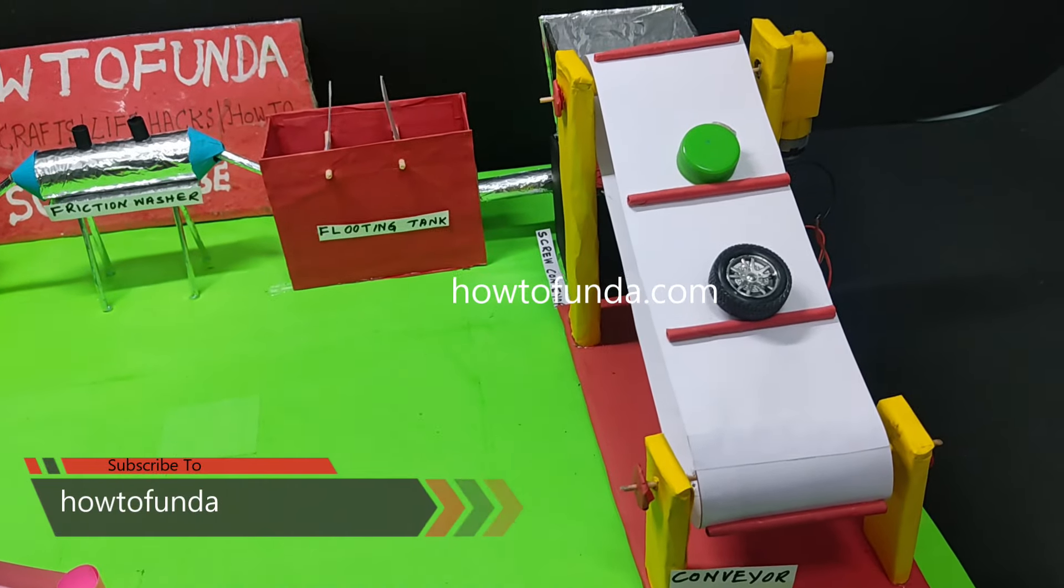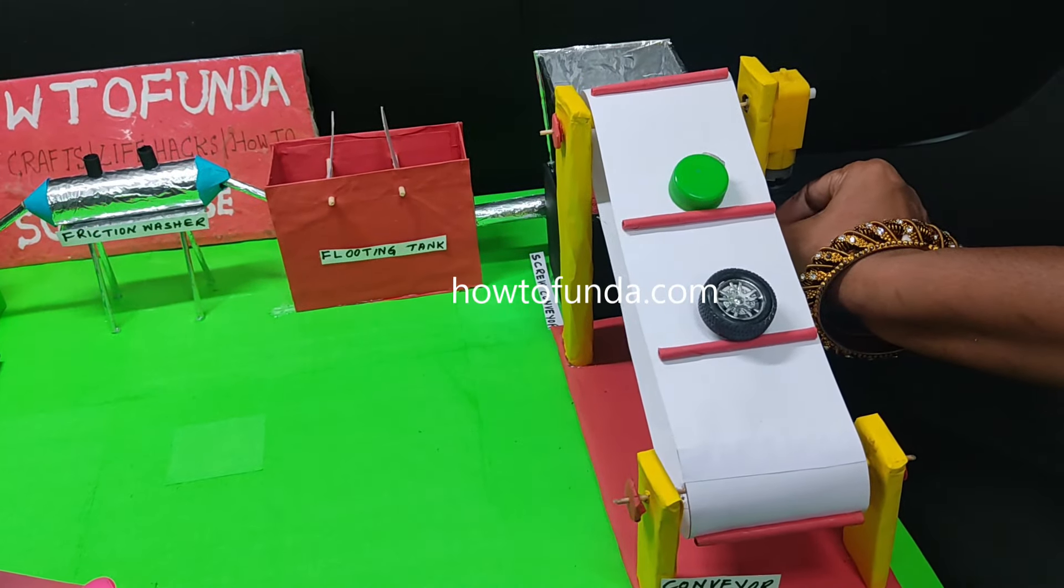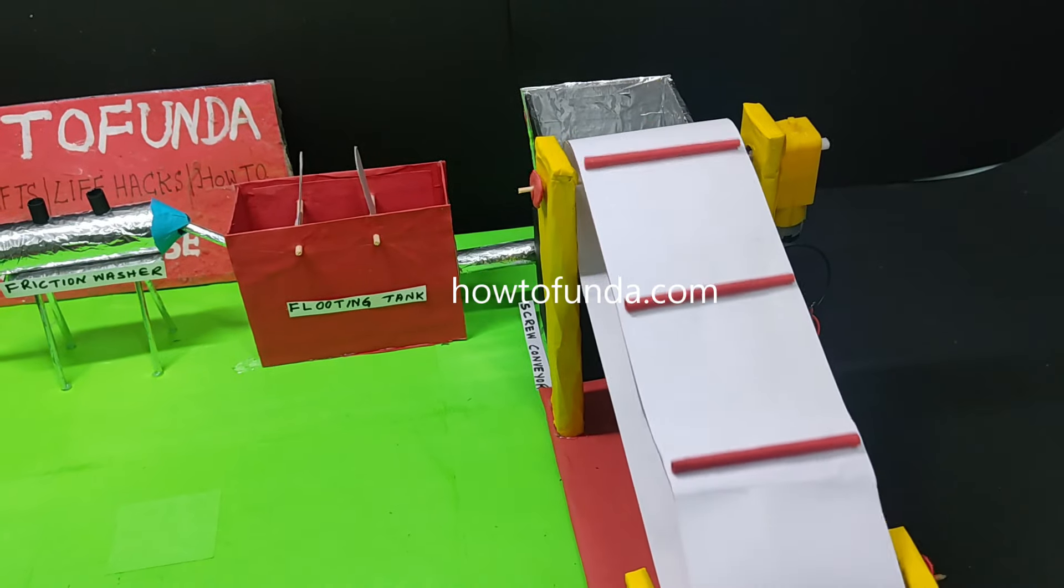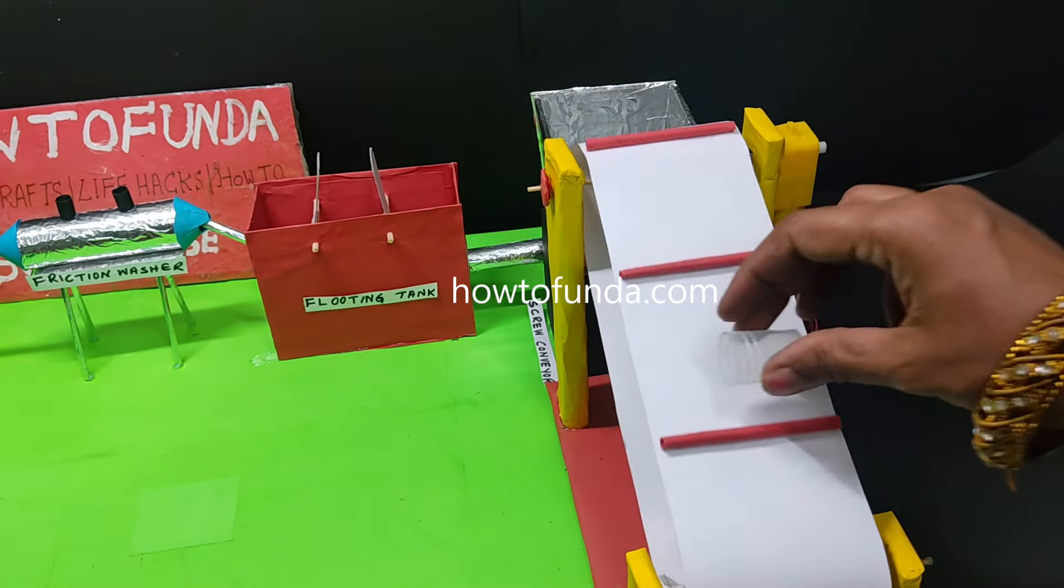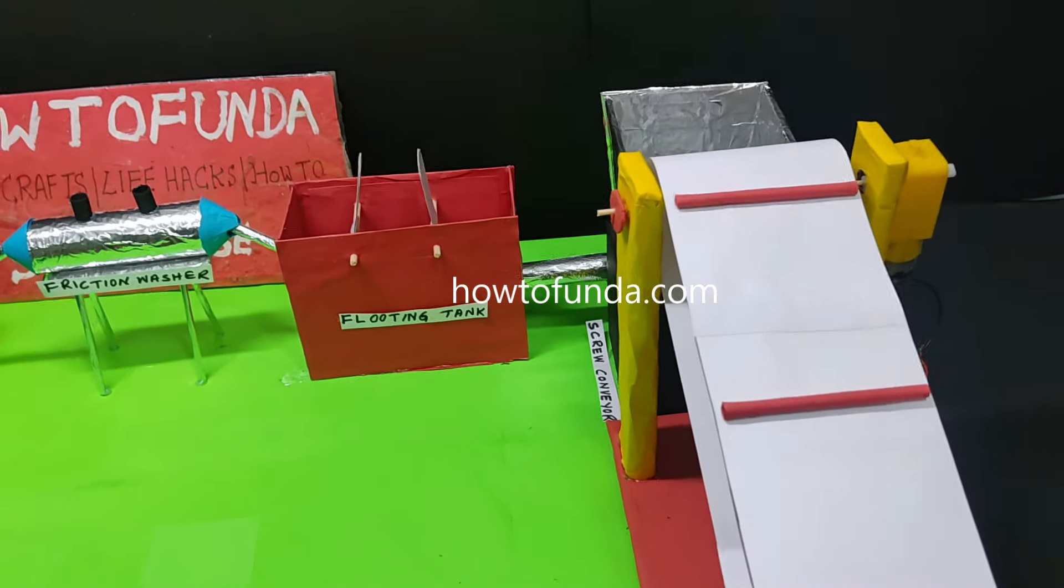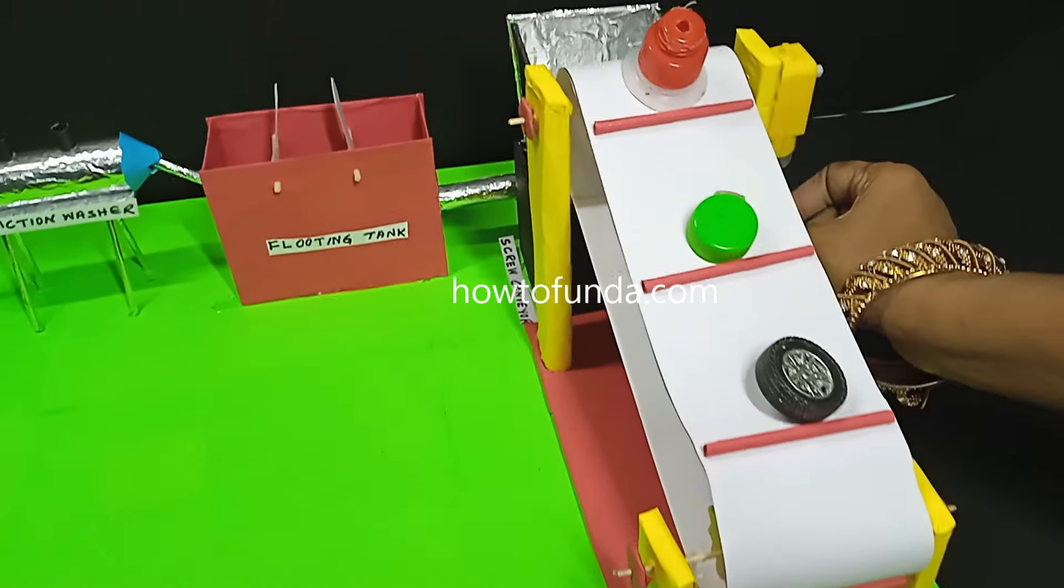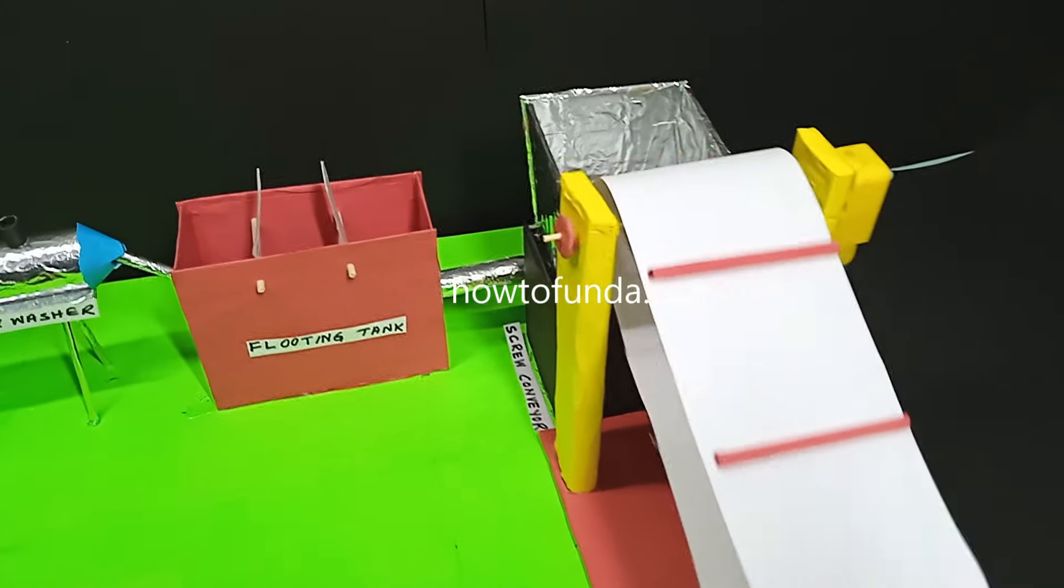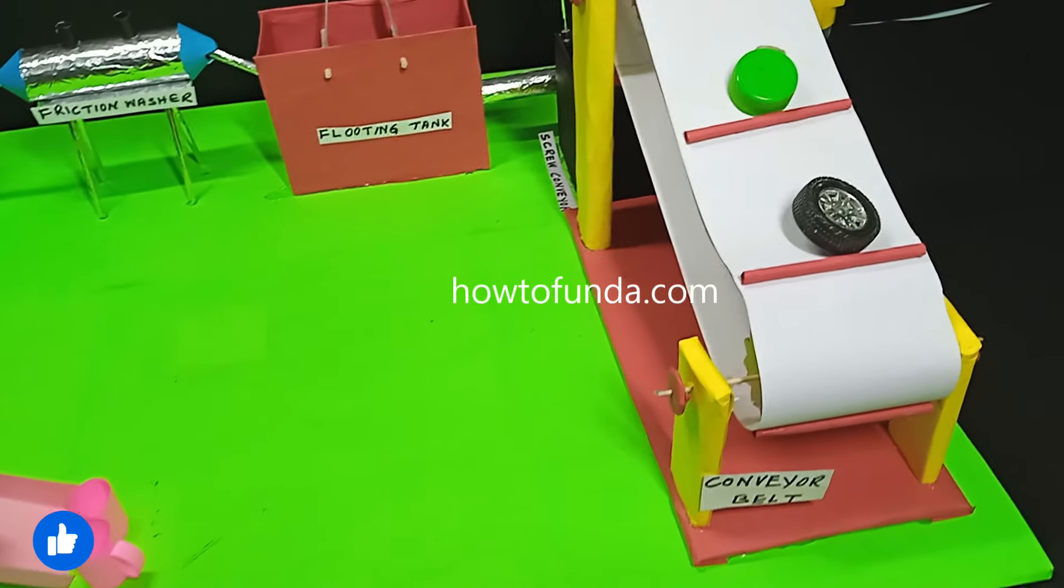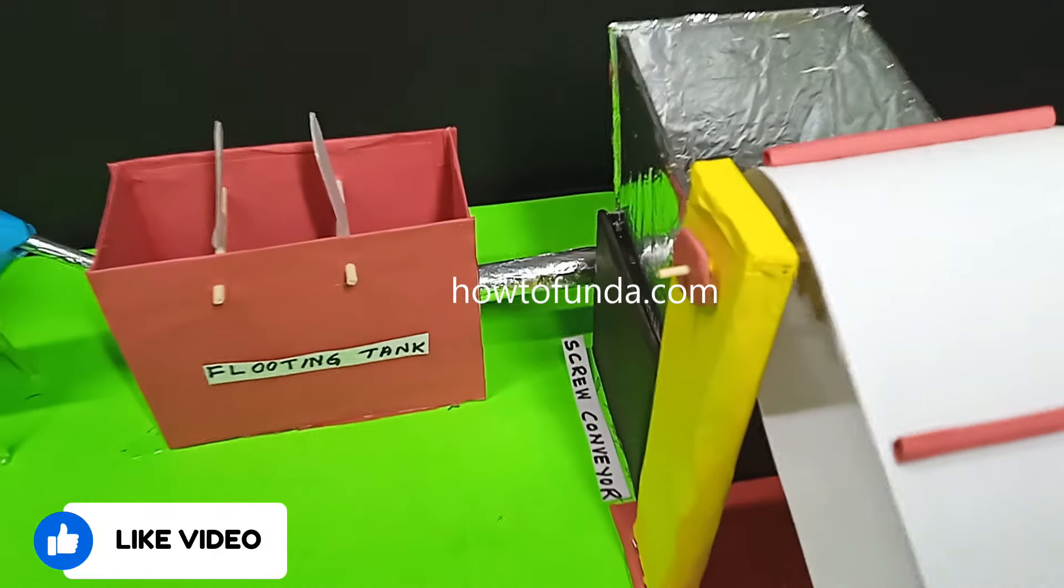The third important step is, once we identify which plastic we have to recycle, we put it into a sink float tank where the plastic gets separated based on the specific gravity of those plastic items.